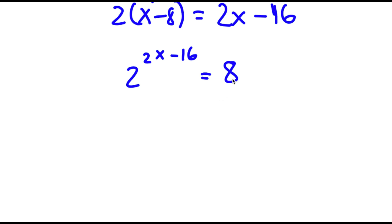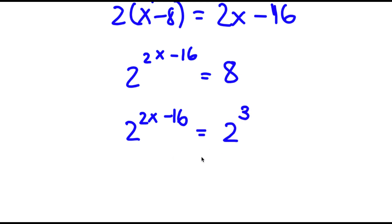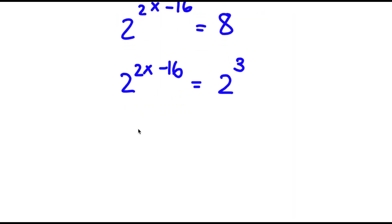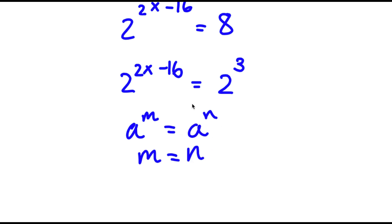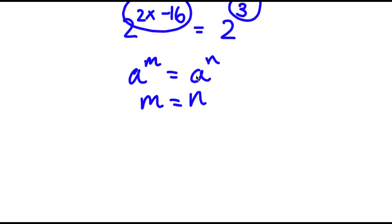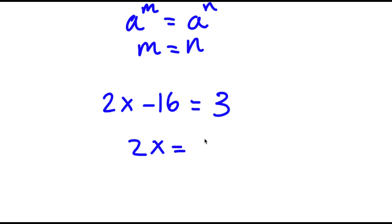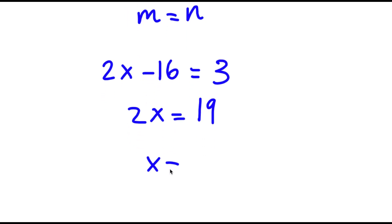To solve this, I want to make both terms have the same base. Right now the bases are 2 and 8. Since 8 equals 2 to the power of 3, I rewrite this as 2 to the power of (2x minus 16) is equal to 2 to the power of 3. Now the bases are the same. If a to the power of m equals a to the power of n, then m equals n. So 2x minus 16 equals 3, meaning 2x equals 19, and x equals 19/2.